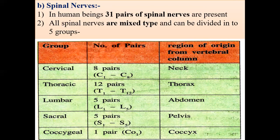If we consider the total number of vertebrae, they are 33 in number. In between them, gaps are present called intervertebral discs, and from the lateral side of each intervertebral disc, a pair of spinal nerves arises. So automatically there are 31 pairs. Remember, 33 vertebrae are present in the human vertebral column, and from each lateral gap, the spinal nerves arise.